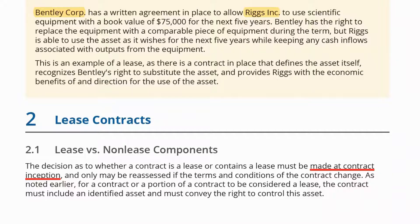Now that we went through the definition of leases, what about lease contracts and how to deal with leases? The first step in accounting for leases is to analyze the contracts and identify the lease and non-lease components. Some contracts might contain leases and maintenance, or leases and other services. We have to differentiate between those components, as the accounting treatment for each might be different. At contract inception, we have to decide on whether the contract contains a lease or other non-lease components.